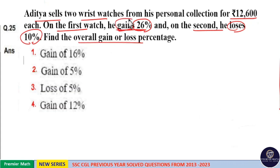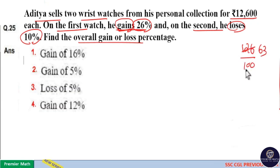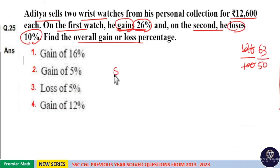Here on the first, he gains 26% means profit. Profit 26% means 100 plus 26, 126% which means 2 goes 63 times in 126, 2 goes 50 times in 100. That is, if 50 part is the cost price, then 63 is the selling price.